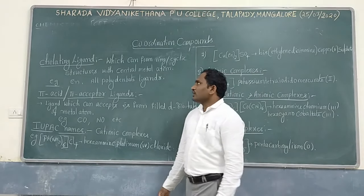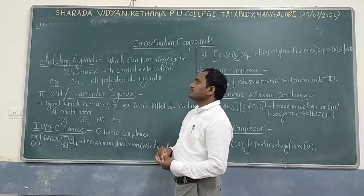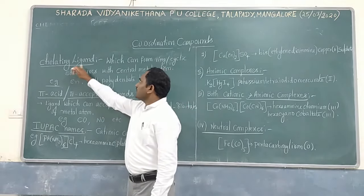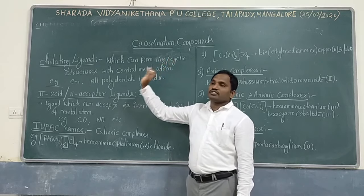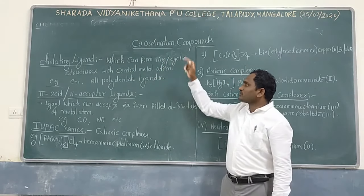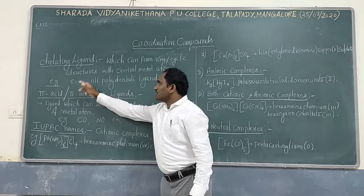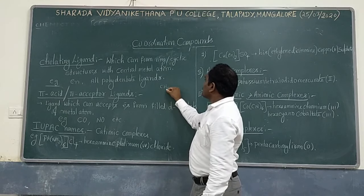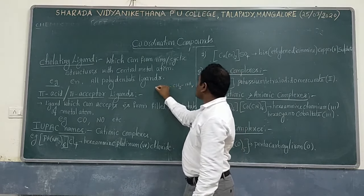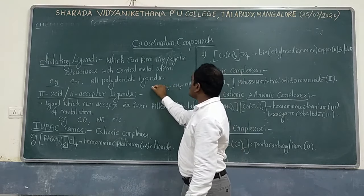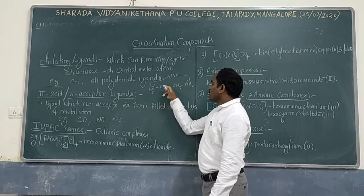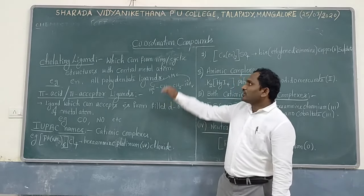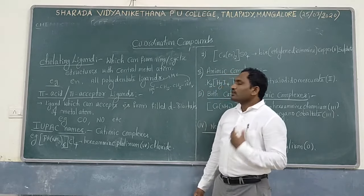The main concepts we will discuss include types of ligands, and the main three types are important. First is chelating ligand. Chelating ligand means a ligand which can form ring or cyclic structures with the central metal atom. Example: ethylene diamine, with structure CH2-CH2-NH2-NH2. Both donor atoms NH2 and NH2 will form a bond and create a cyclic structure. Such type of ligands are called chelating ligands, and they increase the stability of complexes compared to normal ligands.